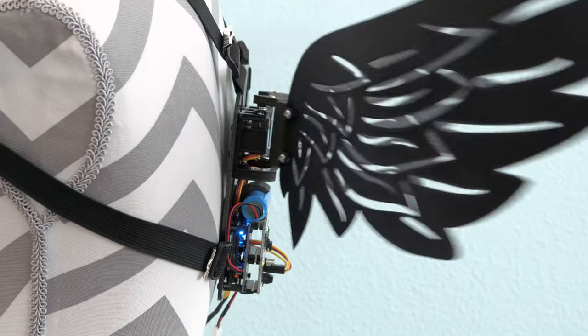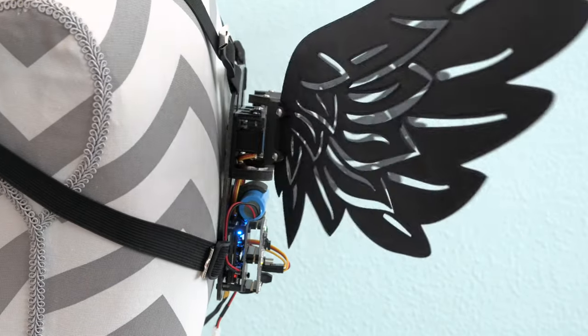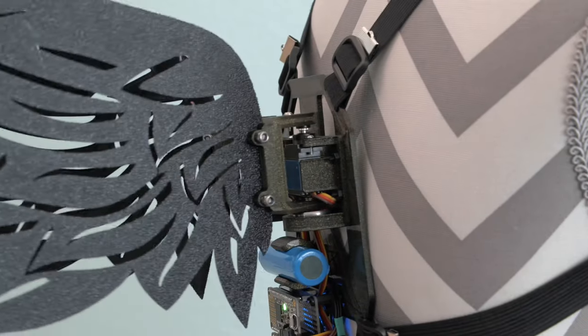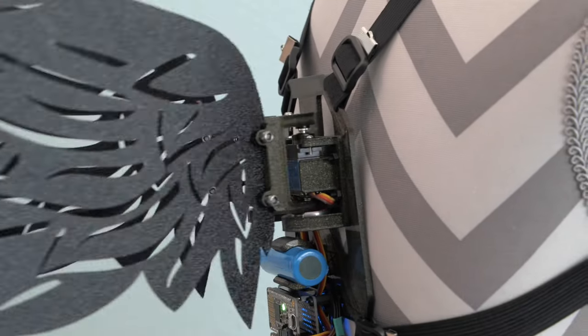The wings are attached to 3D printed brackets that are secured to Metal Gear servos. These are strong enough to support medium weight wings with ball bearings as counterweight.